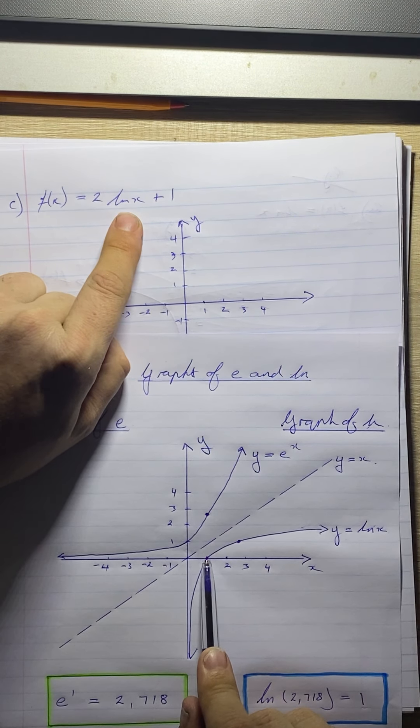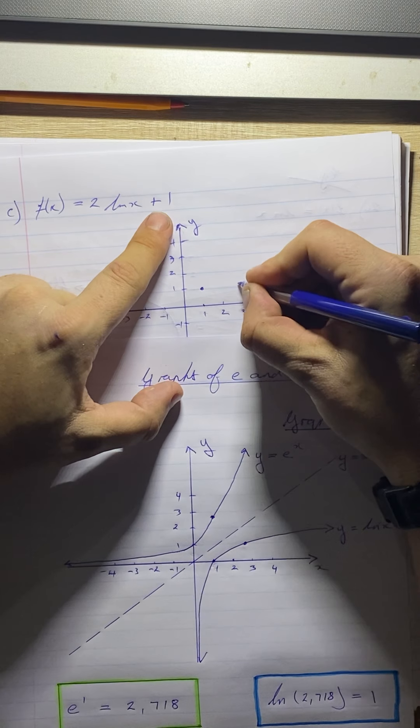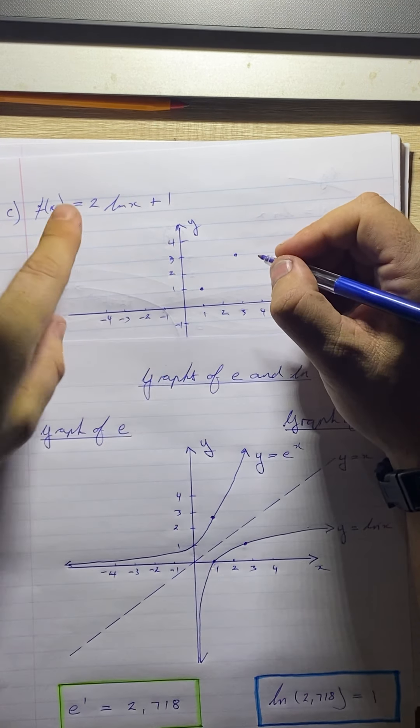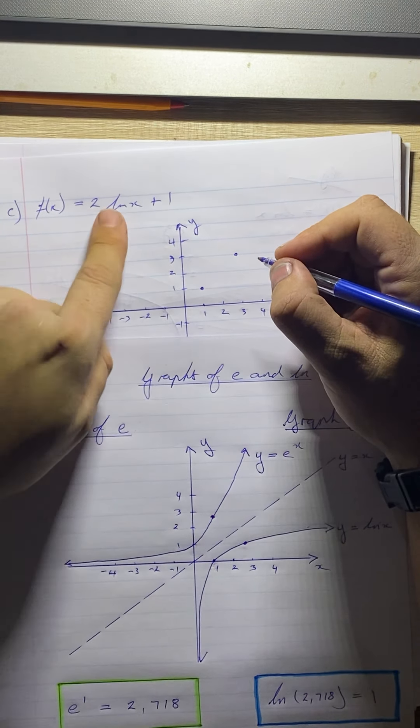Now, at this point here, 2.718, it was 1. Our y value is 1. So 2 times 1 is 2 plus 1 is 3. So at 2.718, which is over here, it's now going to go up to 3. So we've doubled it, plus 1. And again, this has not affected our asymptote in any way.